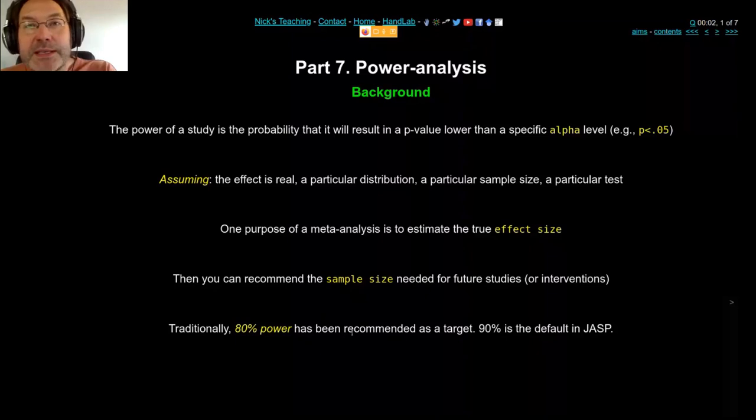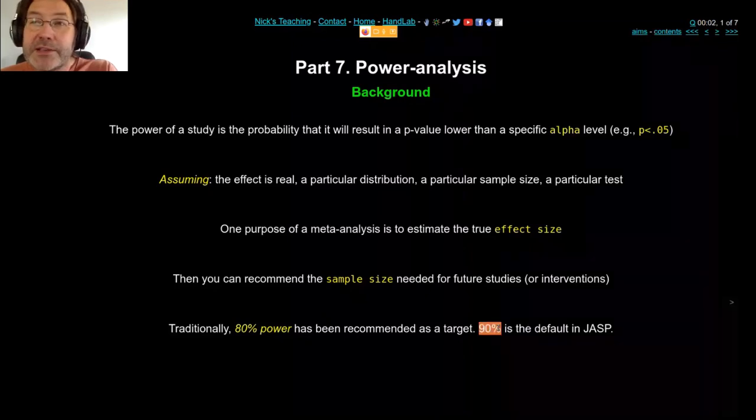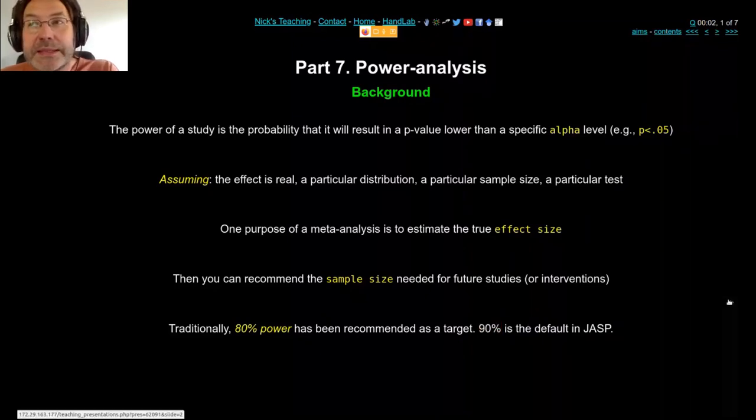But in general, when you measure the power of studies in the literature, it's more like 20 or 30 or 40%. So if you know the size of a real effect in the literature, and you look at the studies, power is much, much lower than it should be. 90% is trying to encourage people to do better studies, larger maybe, but better studies.